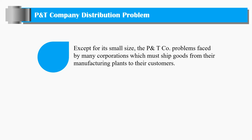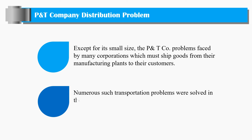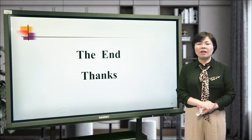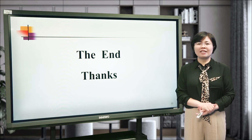That's the prototype example of the transportation problem. Except for its small size, the P&G company problem is similar to what is faced by many corporations that must ship goods from manufacturing plants to their customers. Numerous such transportation problems have been solved in the process of identifying the best production and distribution systems. That's all for today — thank you.